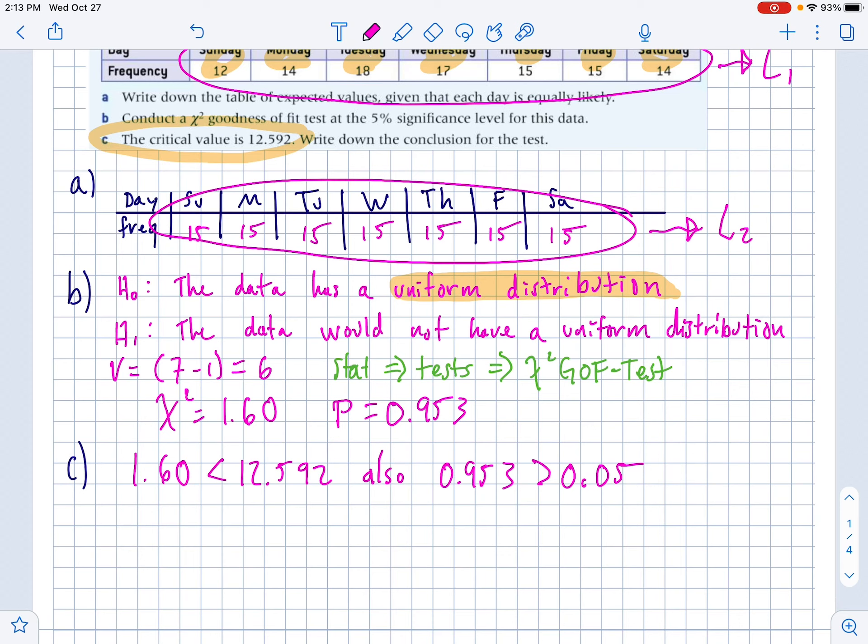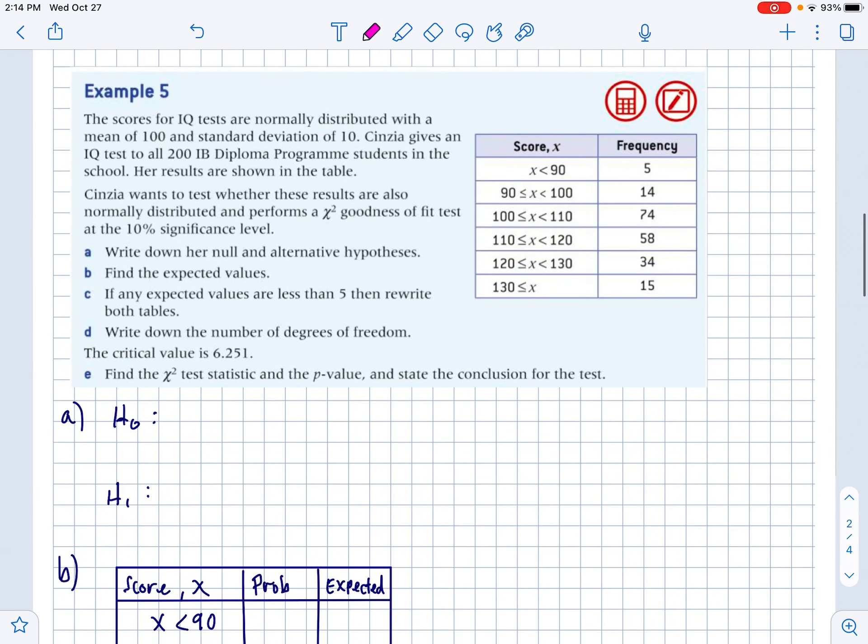So if the p is low, reject the ho. The p-value is not low, so we're not rejecting ho or accepting the ho. And the chi-squared value is lower than the critical. So with both of these rules, you accept the null hypothesis. Which means that the data does not satisfy a uniform distribution. So that was the chi-squared goodness-of-fit test for looking if something has a uniform distribution.